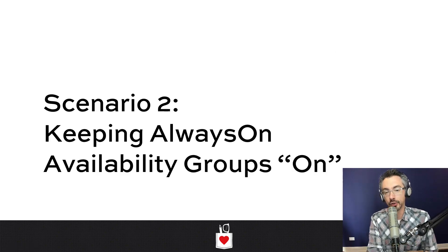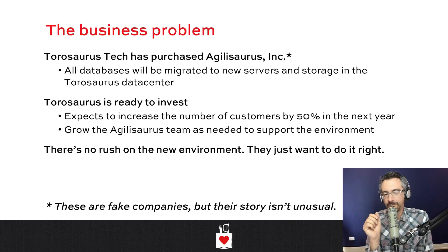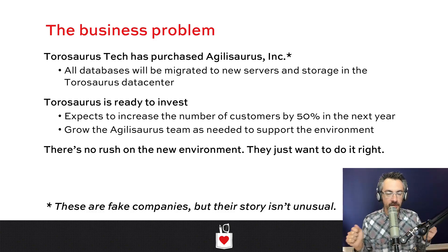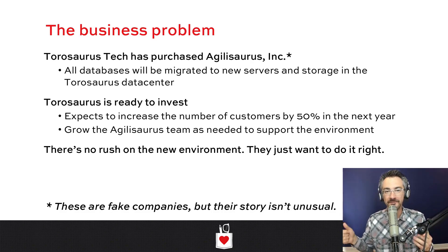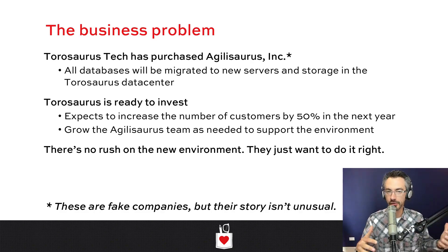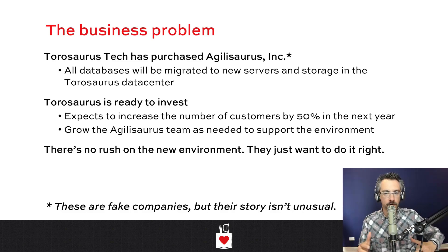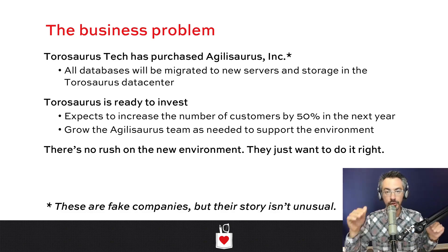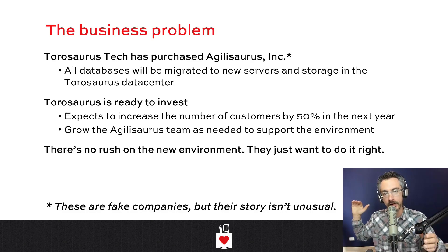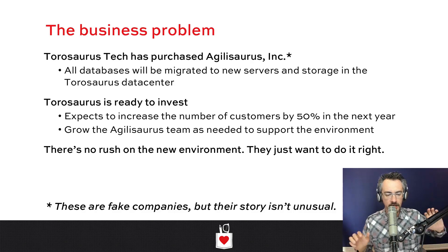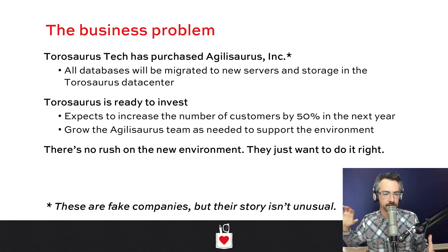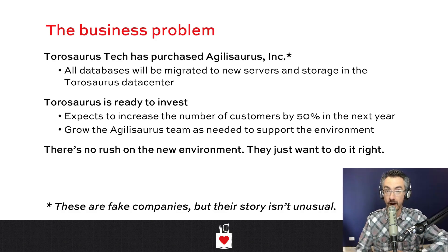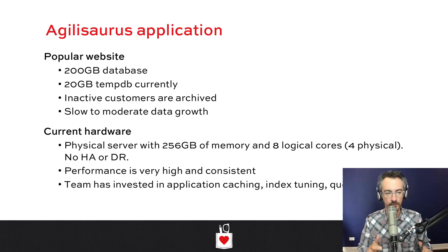Homework number two: keeping always-on availability groups on. We have another startup, but this time they hit the startup lottery. Agilisaurus was a tiny ninja team of developers who built something really awesome and got acquired by a much larger company, Taurisaurus. Taurisaurus is investing heavily, planning to grow it, and already has a team of sysadmins and DBAs — they're used to doing things the right way and want enterprise-grade advice.